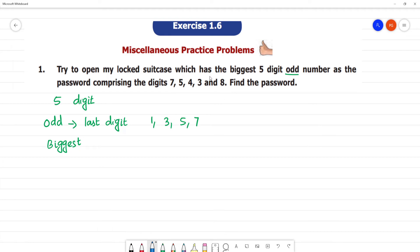First number should be the biggest among them, so 8 comes first. The biggest number is arranged: 8, then 7, then 5, then 4, then 3.